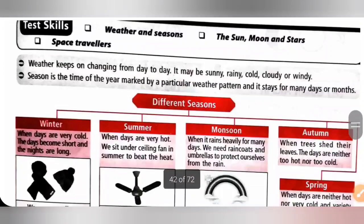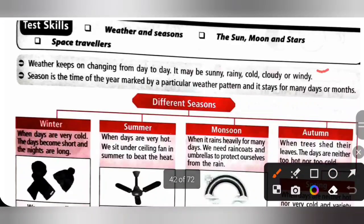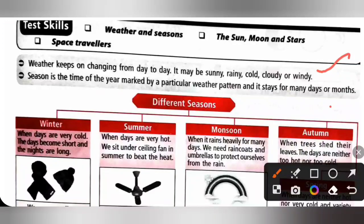So what is weather? Weather keeps on changing from day to day. It may be sunny, rainy, cold, cloudy or windy. What is season? Season is the time of the year marked by a particular weather pattern and it stays for many days or months.